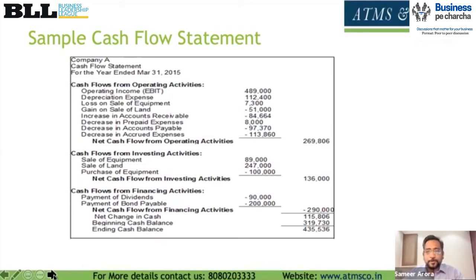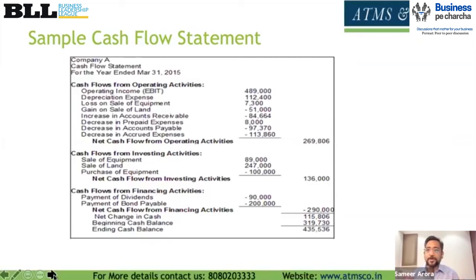Out of this, we paid dividends to shareholders of 90,000 rupees and repaid bonds or debts of 2 lakh 90,000 rupees, so we still retained 1 lakh 15,000 for the year. If somebody can tell the story of your business simply — 2 lakh 70,000 of profit, some asset purchases, bond repayments, dividends paid, and still added 1 lakh 15,000 — combined with an opening balance of 3 lakh 19,000, you're now sitting on a healthy cash balance. It's important to go back and ask your accounts team to give you a cash flow statement in a manner you can understand, so you truly understand your business.